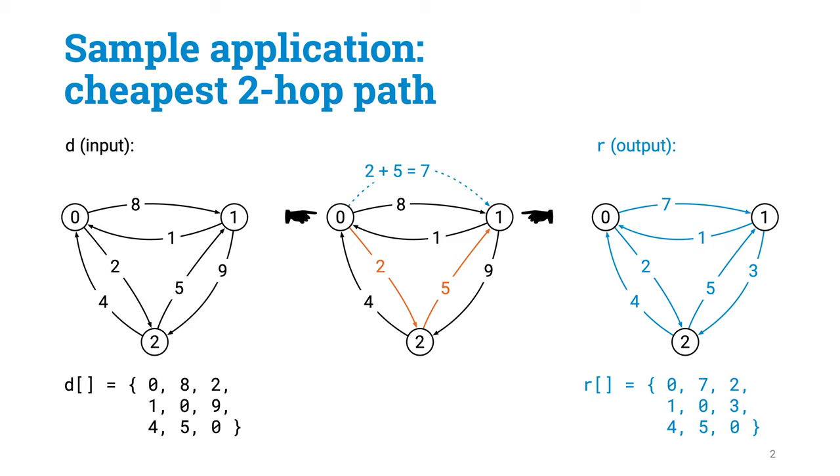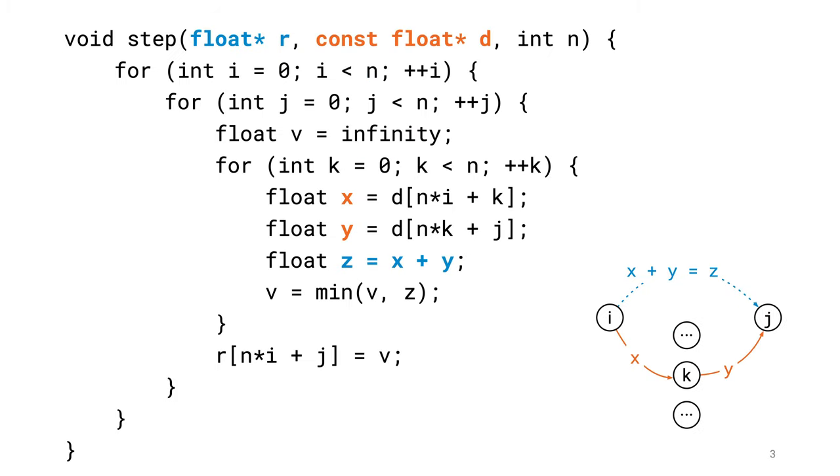let's return to the sample application that we have been using as a running example throughout this course. For all nodes I and J, we want to know what is the cheapest route from I to J that takes at most two hops. We have seen many CPU implementations for this problem, but here is the first baseline implementation, which is a good starting point for developing a simple GPU solution.